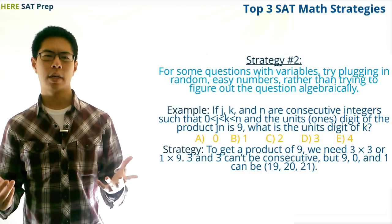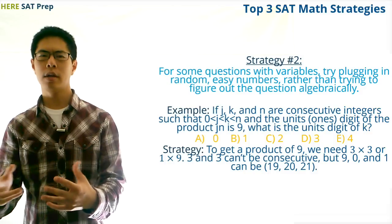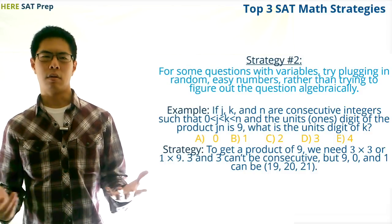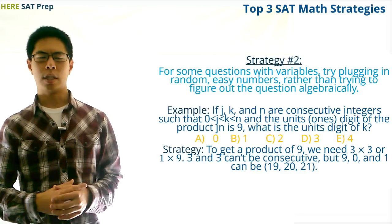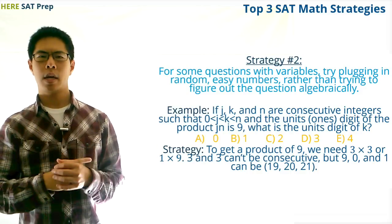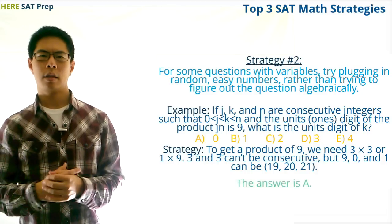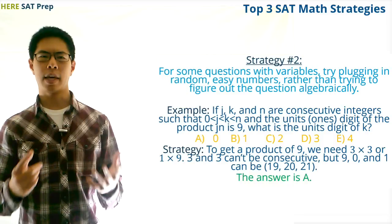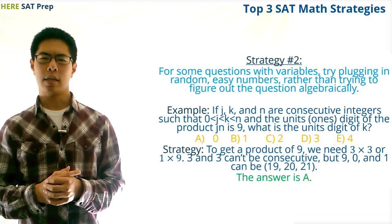The question doesn't give a limit for how big the numbers can be, so we can have 19, 20, and 21, or 29, 30, and 31. So, for this question, instead of trying any fancy algebra, we simply thought of three consecutive numbers that would fit the constraint given in the problem. Finally, the problem is looking for the ones place of the k number, which is the second number, so our final answer is a, zero.